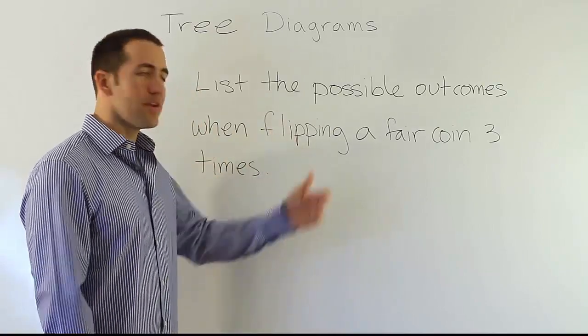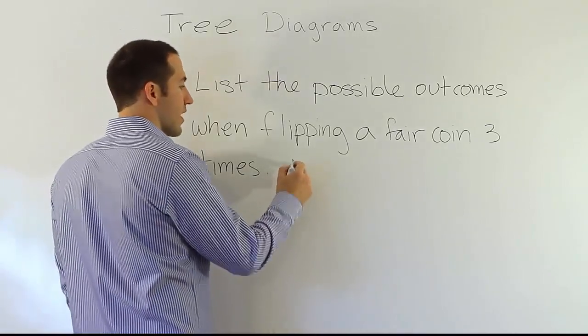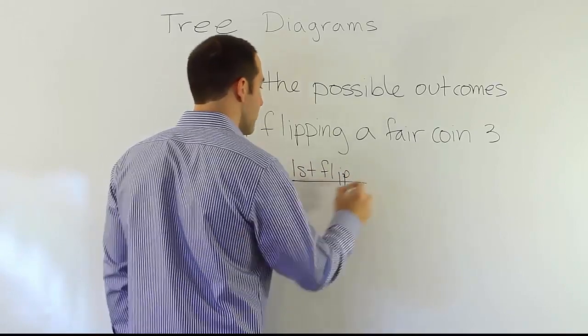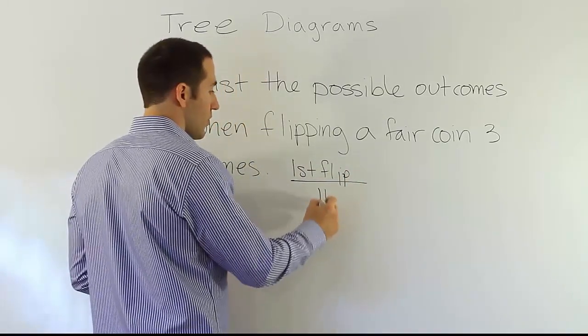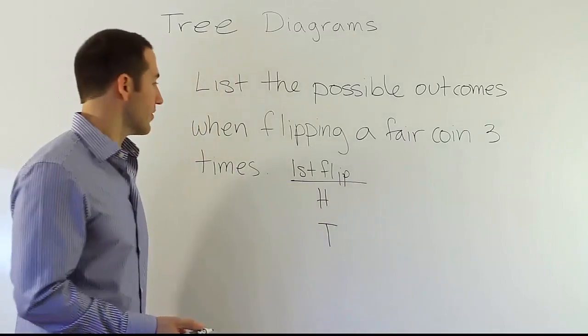Well, if I want to list all the different ways this could turn out, one of the efficient ways to do it is to use a tree diagram. Let's talk about the first flip. When you flip a coin, it can either turn out to be heads or tails. That's the only two possibilities for the first flip.